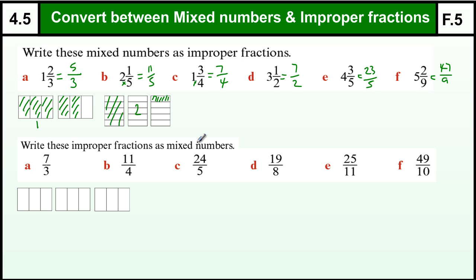Going the other way, if you have got the improper fraction and you are trying to make a mixed number, if you think about 7/3, what is that? Well, there is 1, 2, 3, 4, 5, 6, 7 thirds, and that is 1, 2 wholes and 1/3, so that is 2 and 1/3.